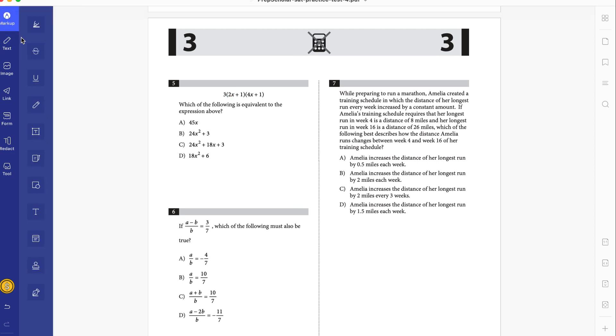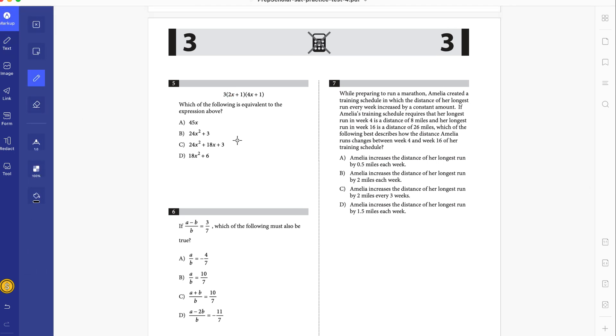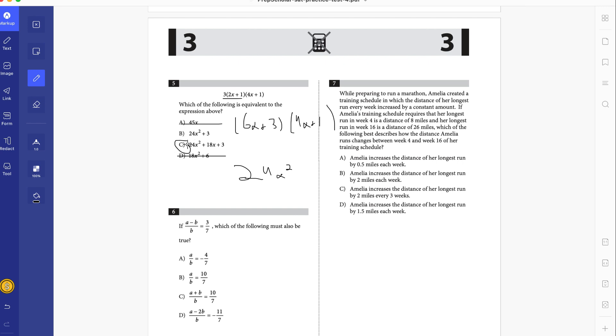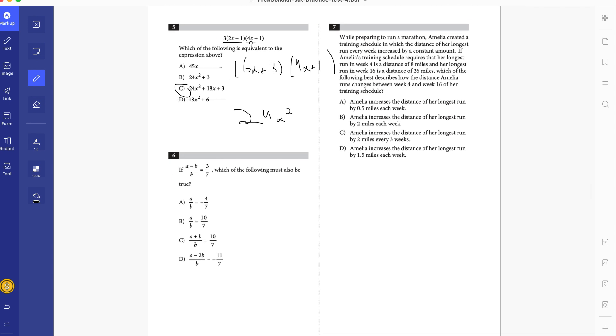Number five. What's the following is equivalent to the expression above? For this, we're just going to distribute. So let's distribute the 3 first. You have 6x plus 3 times 4x plus 1. So this becomes 24x squared, and you want to eliminate as you go. So we eliminate A, eliminate D. Inner is the inner outer term, because it's going to be 12x. It's going to be 6x, which is 18x. So right there we have C as our answer. And now we move on. See, you don't need to read the entire question. You don't need to finish all of these steps. You don't have to do all of that stuff.